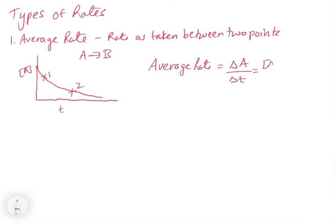So this would be the concentration of A at point 2 minus the concentration of A at point 1, divided by the time at time 2 minus the time at time 1. And that would give us the rate.